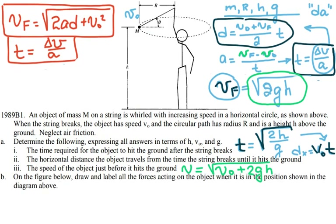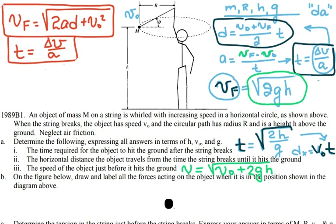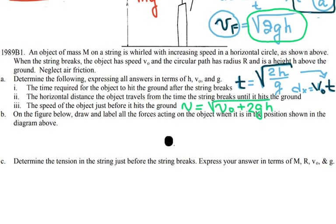For the next part, they ask you to use the figure provided and a dot shown below to label all forces acting on the object in the position shown. I'll show the forces on the object: there is the tension force and the force of gravity. On the dot provided, I draw the force of gravity (mg) downward and the tension force directed toward the center.